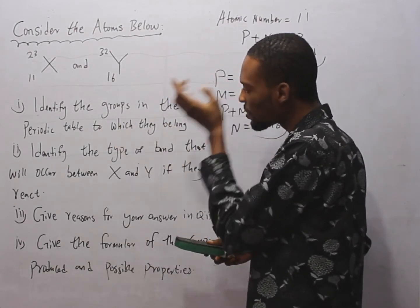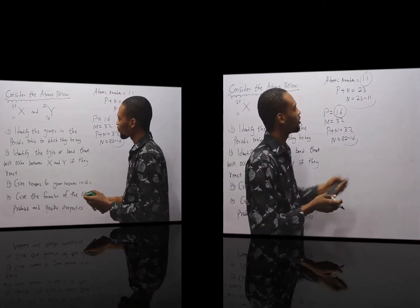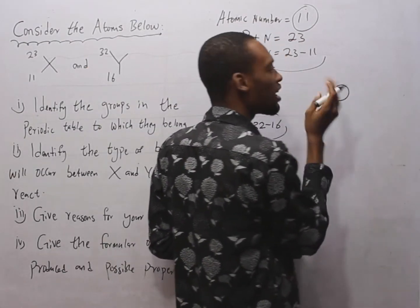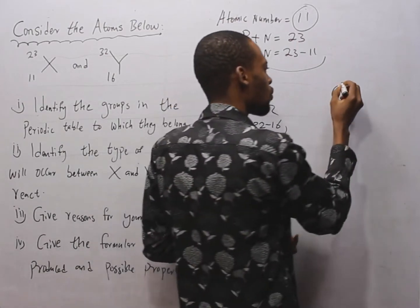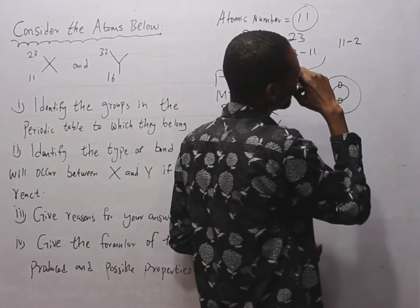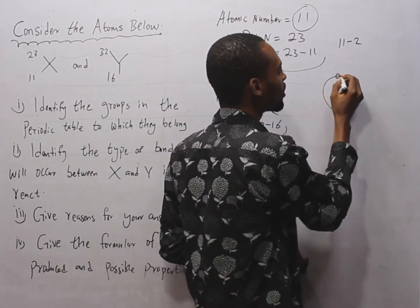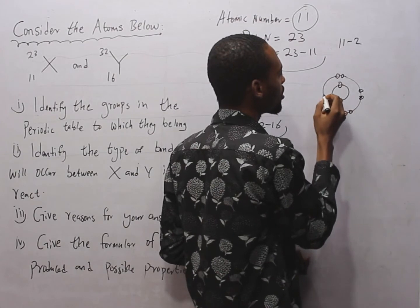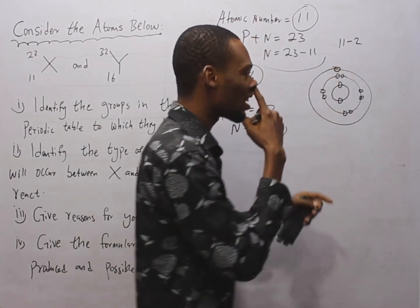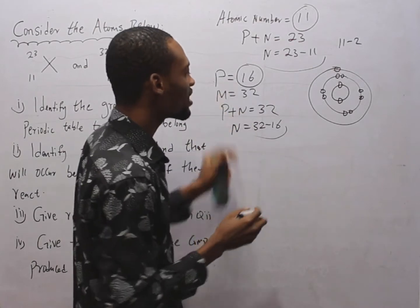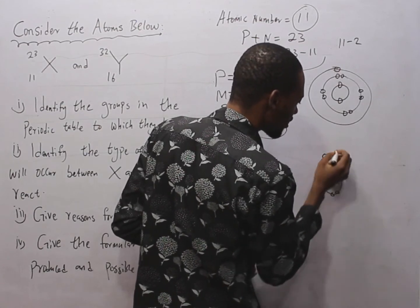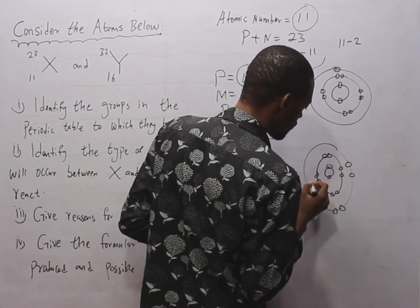The first question asks us to identify the groups in the periodic table to which the elements belong. For atomic number 11 (S): the K shell holds 2, L shell holds 8, and the remaining 1 goes to the M shell — giving configuration 2, 8, 1. For atomic number 16 (Y): configuration is 2, 8, 6.